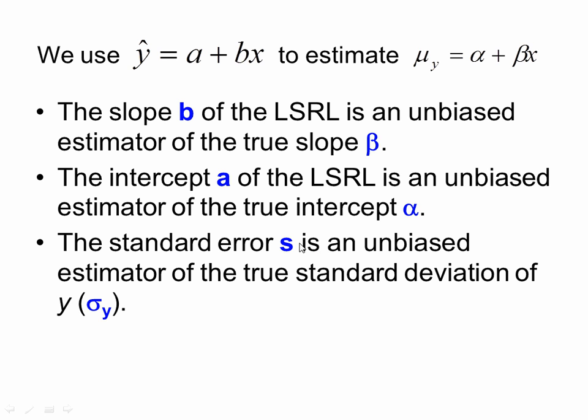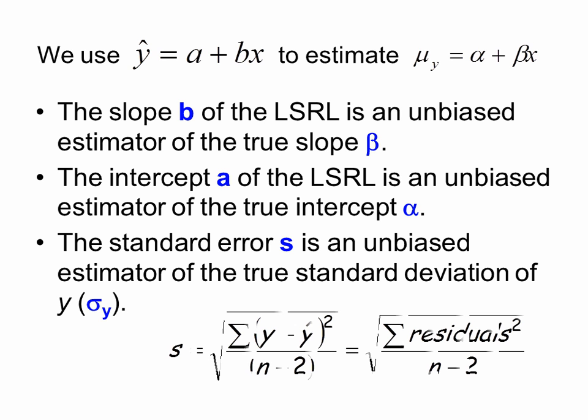Standard error s — this is a lowercase s, so please be careful not to confuse it with capital SE. This standard error s is an unbiased estimator of the true standard deviation of y, which is sigma sub y. The formula is: s equals the square root of the summation of (y minus y-hat) squared, all over n minus 2. That means y minus y-hat represents your residuals. For degrees of freedom, since we're dividing by n minus 2, our degrees of freedom are n minus 2.